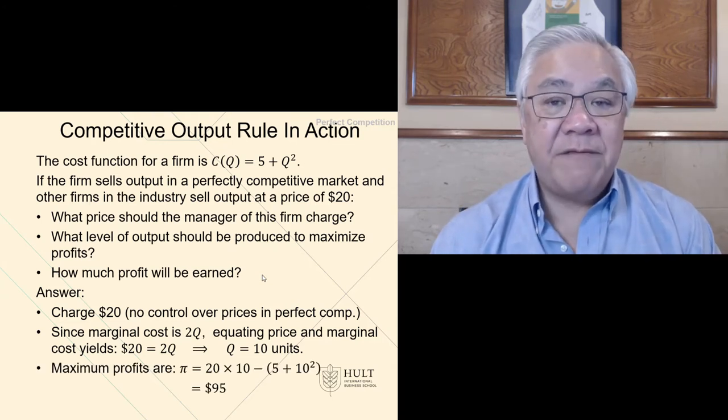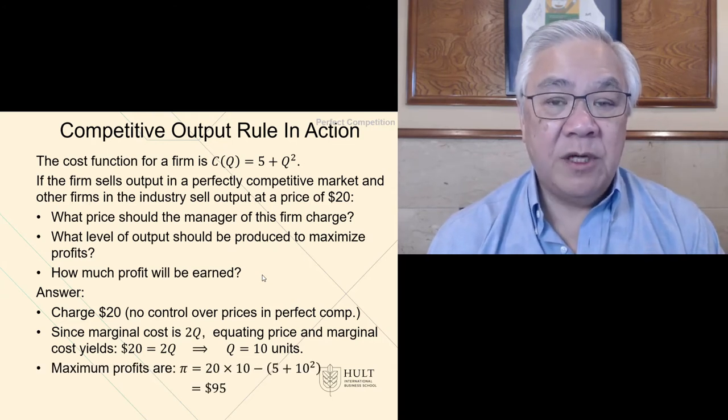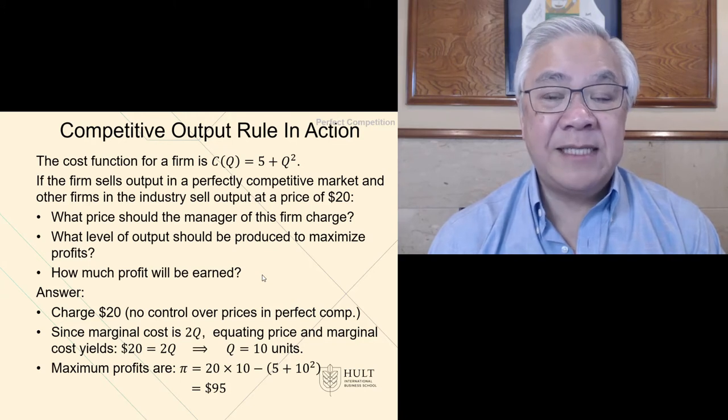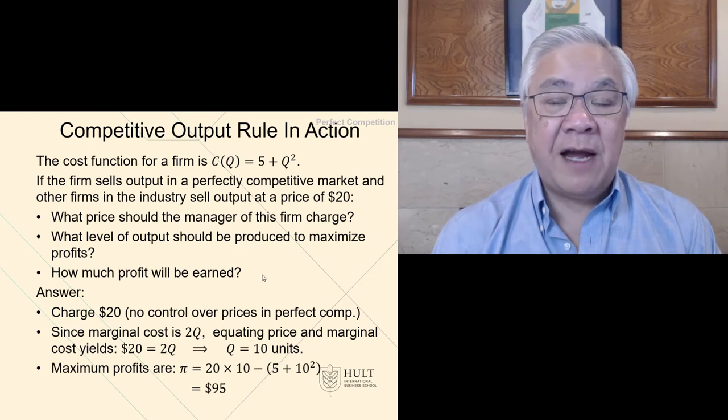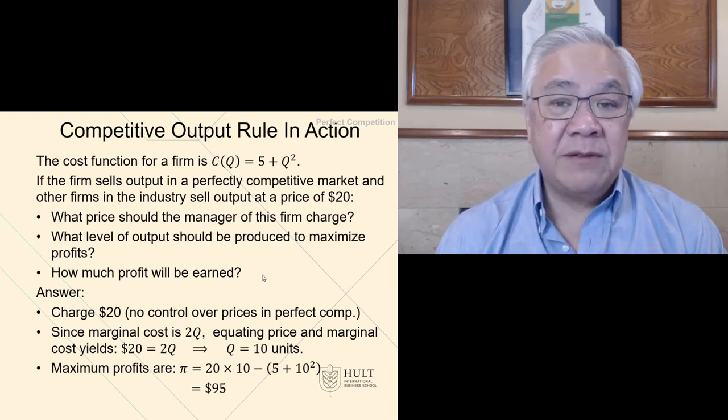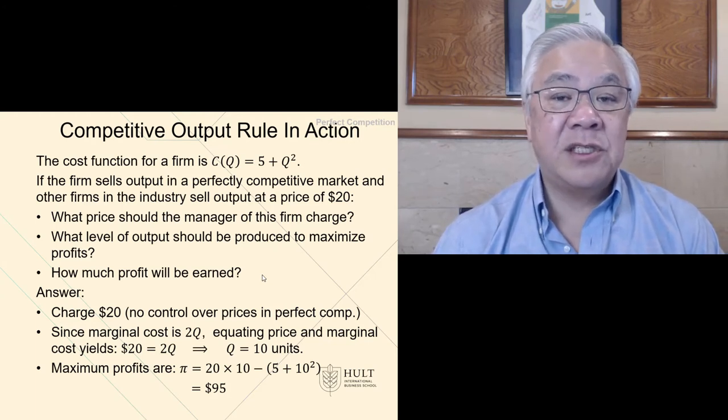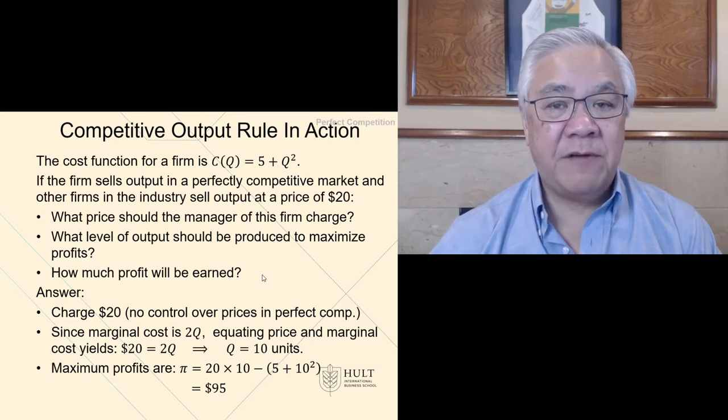So the maximum profits are the revenue, which is price times quantity, 20 times 10, minus the cost, which is 5 plus Q squared, or 5 plus 10 squared. The resulting calculation leads to $95 maximum profit for this firm.